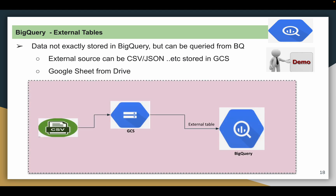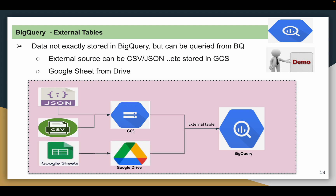In the case of a BigQuery external table, we can query data available in a GCS bucket — it can be a CSV file or a JSON file. We can also query a Google Sheet available in Google Drive. In this case we will not load any data into BigQuery but we can still query it. We can also query Cloud SQL and Cloud Bigtable data using BigQuery — we call this concept a federated query, which we will cover in a different video. In this video we will see how to create an external table on top of a CSV or JSON file in a GCS bucket and also on top of Google Sheets.